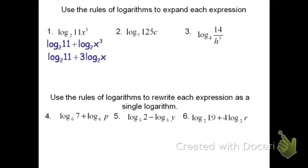For the next one, we can say this is log base 5 of 125 plus log base 5 of c. I can simplify log base 5 of 125 because 125 is a power of 5. Since 5 to the third is 125, log base 5 of 125 is just 3. So I get 3 plus log base 5 of c.